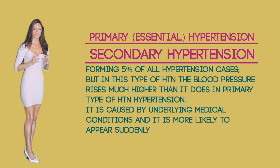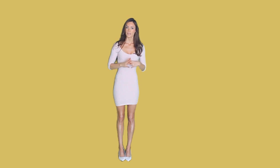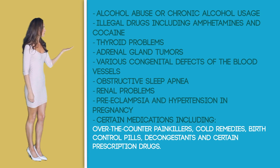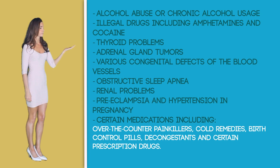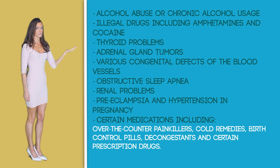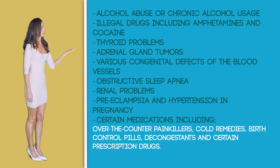Secondary hypertension is caused by underlying medical conditions and is more likely to appear suddenly. Some of the medical conditions and medications that can cause secondary hypertension are alcohol abuse or chronic alcohol usage, illegal drugs including amphetamines and cocaine, thyroid problems, adrenal gland problems, various congenital defects of the blood vessels, obstructive sleep apnea, renal problems, preeclampsia which is hypertension in pregnancy, and certain medications including over-the-counter painkillers, cold remedies, birth control, decongestants, and other certain prescribed drugs.